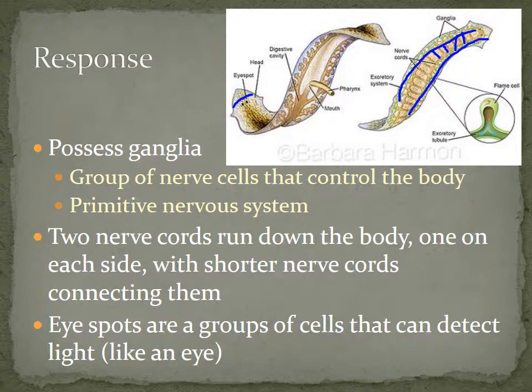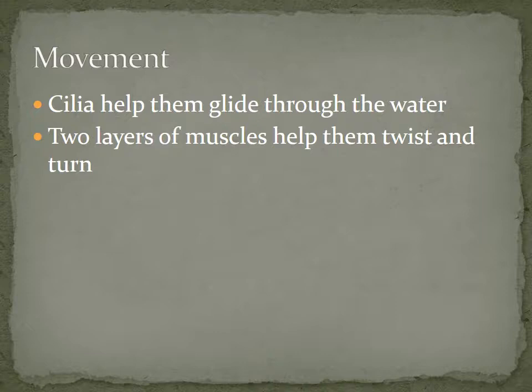They also have eye spots, which you can see in the diagram. They look like little eyes but are not eyes in the sense that we have — they are a group of nervous tissue cells that respond only to light. Not all flatworms move, but those that do use cilia — little hair-like structures that beat together to help them glide through water. They also have two layers of muscles that allow them to twist, turn, and move through the water.